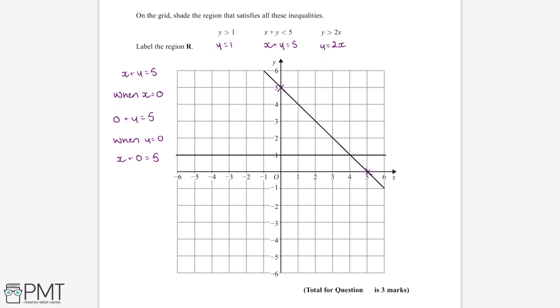And we can use the same process for the line y equals 2x. So again we can choose two values to substitute into this equation. So if we start off with x equals 0, when x equals 0, y will be equal to 2 multiplied by 0. So y will be equal to 0.